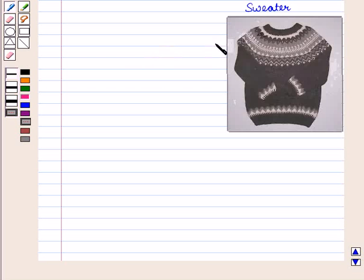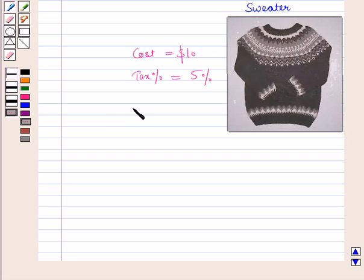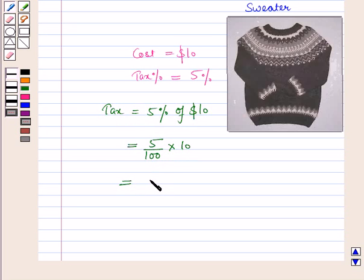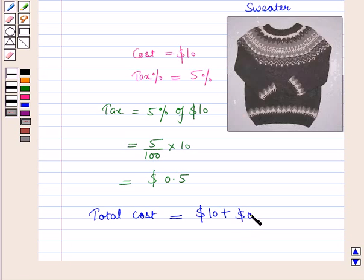Suppose a sweater costs $10 and the tax on its cost is 5%. First, let us find the tax. Tax equals 5% of the cost, which is $10. So this is equal to 5 upon 100 into 10, which equals $0.50. Therefore, the total cost of the sweater will be equal to the cost, which is $10, plus the tax, which is $0.50, giving a total of $10.50.